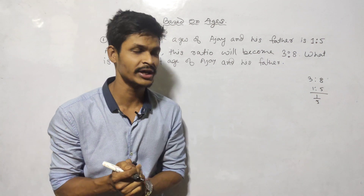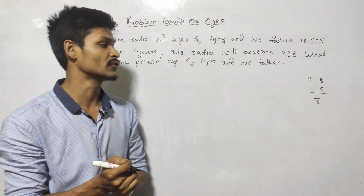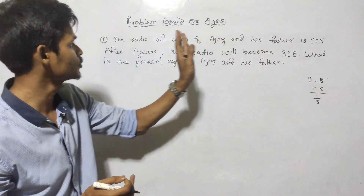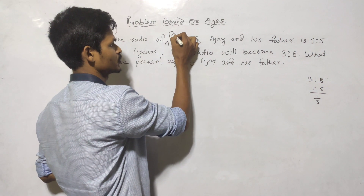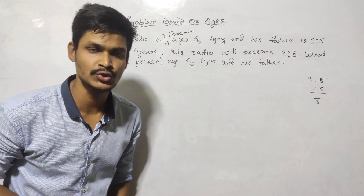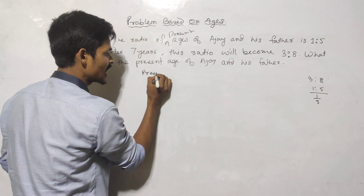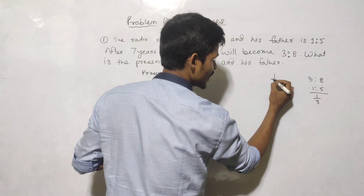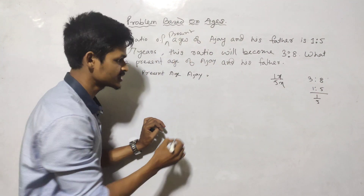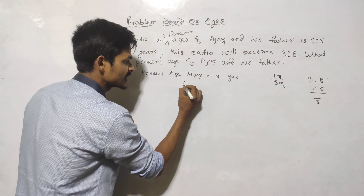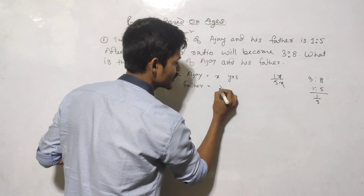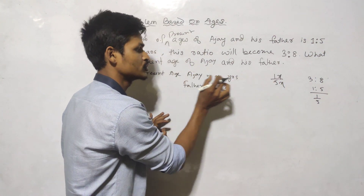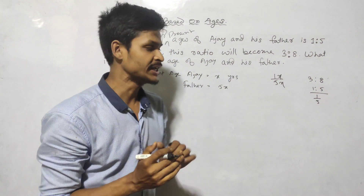What is the present age of Ojoy and his father? Ojoy and his father are in ratio 1 to 5, so let Ojoy be x and his father be 5x.